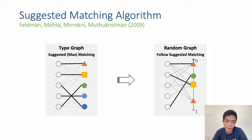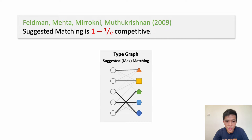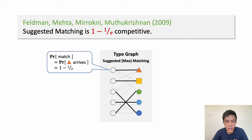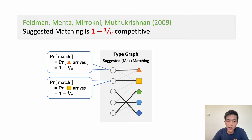If that offline vertex is already taken — which will be the case for the second and third appearances of the same type, for example the second triangle — then the algorithm simply leaves that online vertex unmatched. Despite being somewhat wasteful, it is easy to show that suggested matching is 1 − 1/e competitive: the expected size of the algorithm's matching is at least 1 − 1/e times the expected optimal. For each offline vertex, the probability it gets matched equals the probability that at least one corresponding online vertex arrives, which is 1 − 1/e by the Poisson process property.